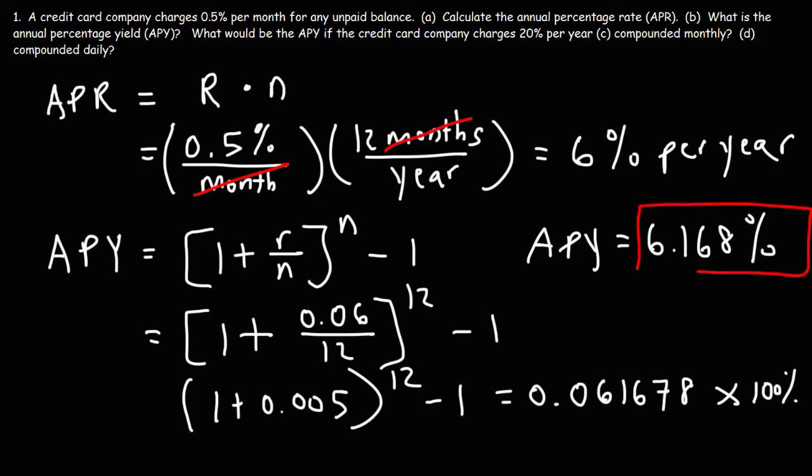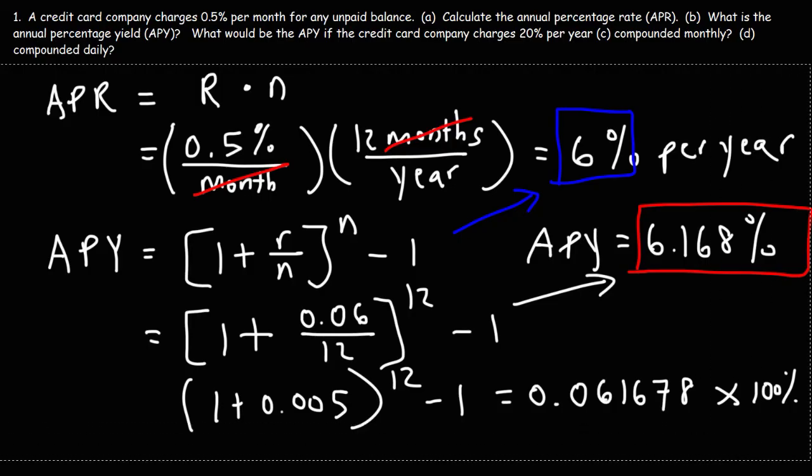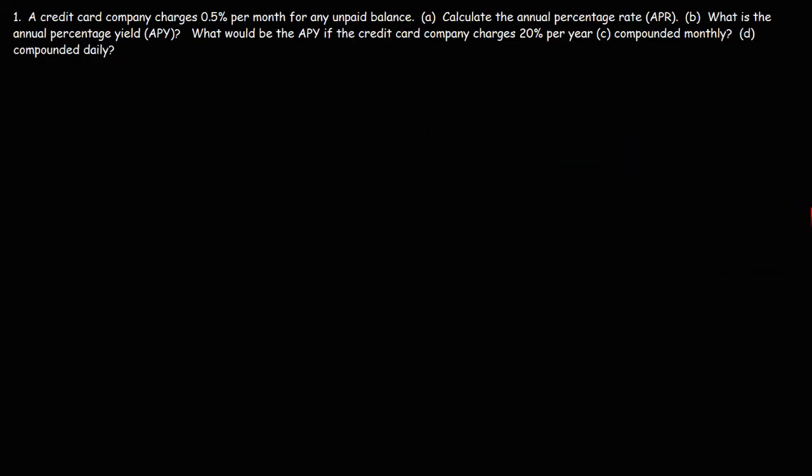So, that's how you can calculate the APY if you know the APR. But looking at these two values, it's not that much different. And the reason being is the interest rate is relatively low. When the interest rate is high, the APY can be significantly different than the APR. When it's low, they're approximately the same. Now, let's move on to Part C. What would be the APY if the credit card company charges 20% per year compounded monthly?